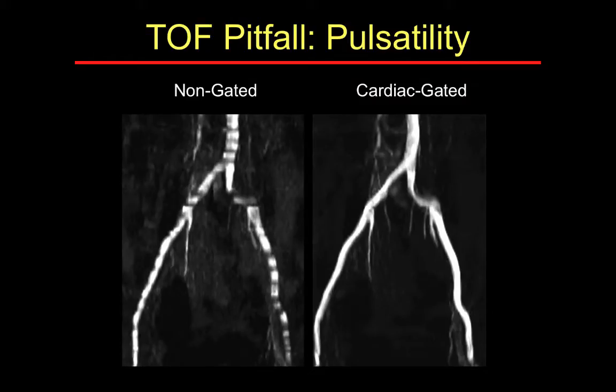Another pitfall for time-of-flight is related to pulsatility — the to-and-fro motion, especially in the distal aortoiliac segments — whereby the saturation bands applied inferiorly return into the imaging slice, creating black bands or Venetian blind artifacts. You can remove this artifact by synchronizing the acquisition with the systolic phase, though cardiac gating overall will increase your acquisition times significantly.